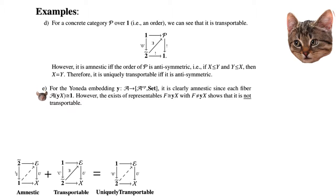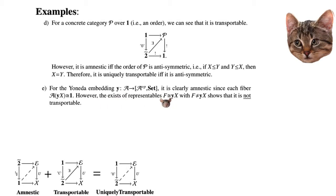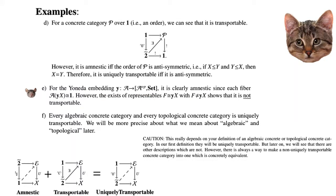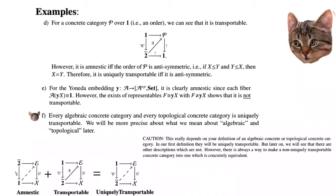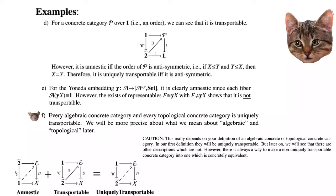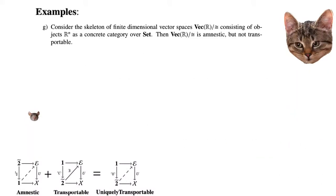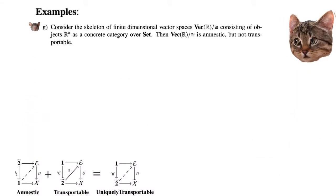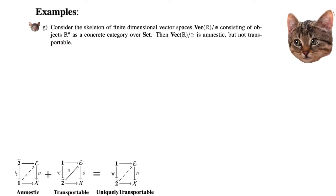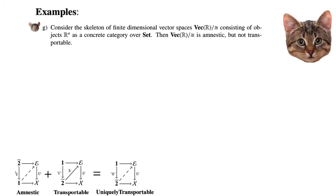The Yoneda embedding is clearly amnestic, since each fiber is isomorphic to either the empty category or, if there is a representable yX, the terminal category. However, if there exist representables F with F not equal to any yX, then it is not transportable. Every algebraic concrete category and every topological concrete category is uniquely transportable — we'll show that later and discuss more about what we mean by algebraic and topological. The skeleton of finite-dimensional vector spaces over ℝ, consisting of all objects ℝⁿ, is amnestic but not transportable, because there aren't enough objects in the skeletal category to lift.